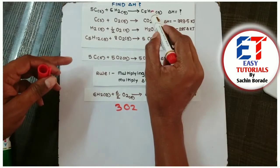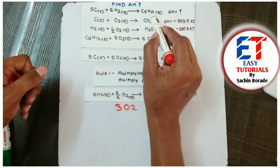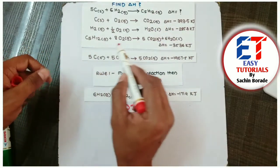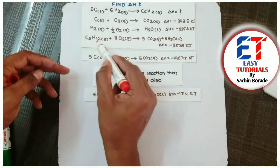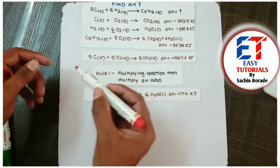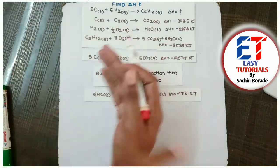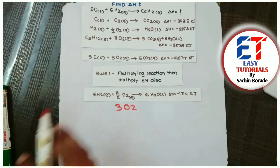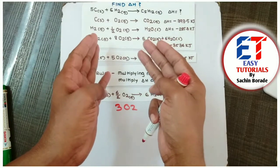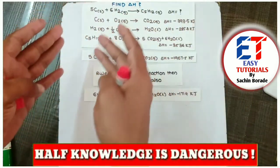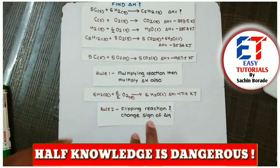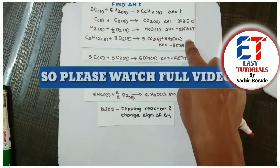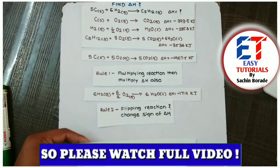So we have to find out the product in this reaction. This is C5H12 gas. But this is on the product side and here it is on the reactant side. So we need to flip the reaction. What do you mean by flip the reaction? Reactants will be on the product side and products will be on the reactant side. But keep in mind rule number 2: if you are flipping the reaction, change the sign of delta H. So the reaction will be like this.